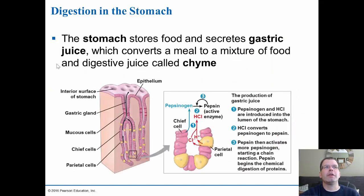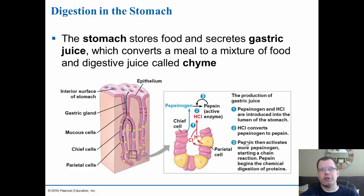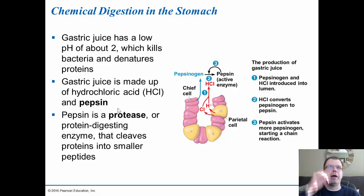Once in the stomach, gastric juices convert the meal into a mixture called chyme. Gastric pits release acid from parietal cells, which take chlorine and protons and convert them into hydrochloric acid. Pepsinogen is then converted to pepsin — the active enzyme that helps break down protein. The HCl helps convert pepsinogen to pepsin, enabling chemical digestion of food in the stomach. Mucus cells coat the stomach lining to protect it from ulcers caused by the acid.